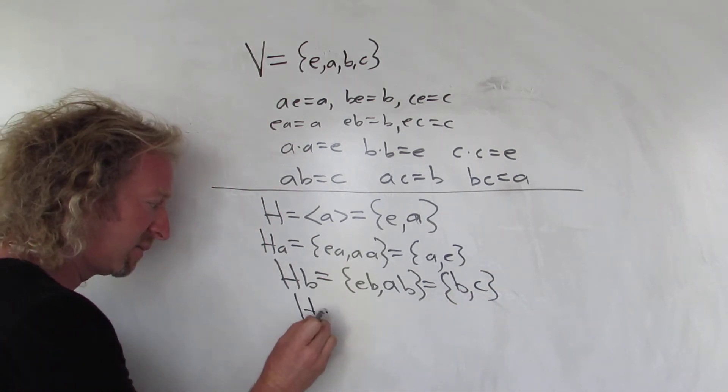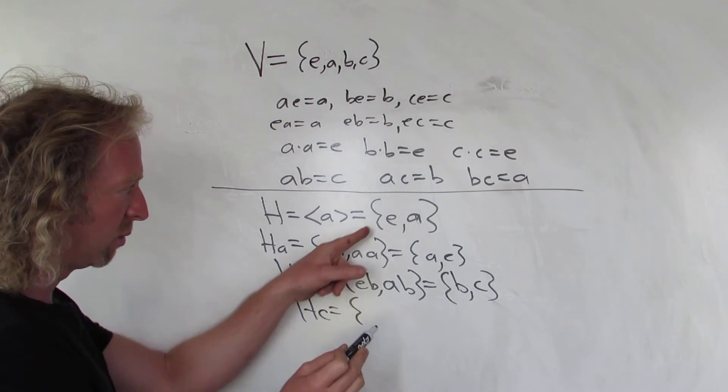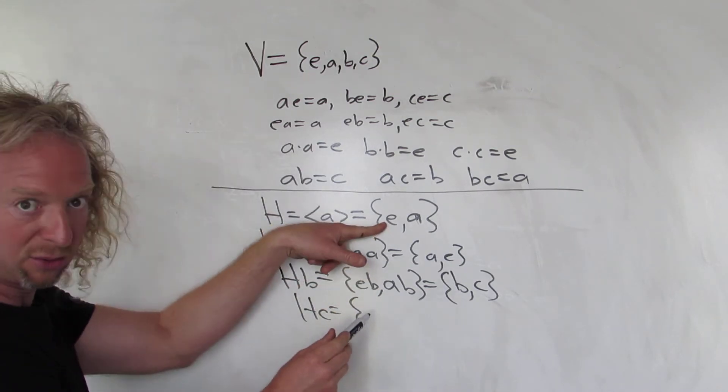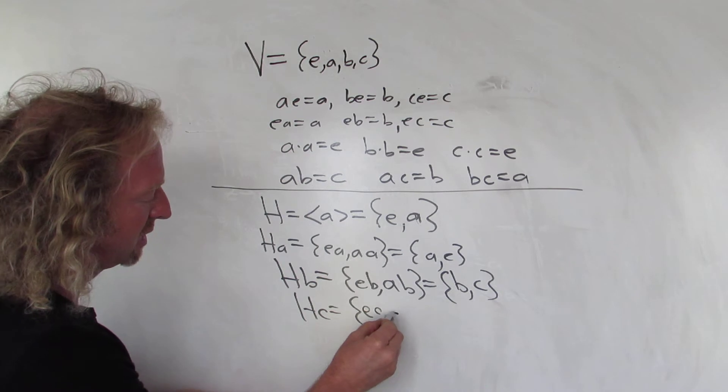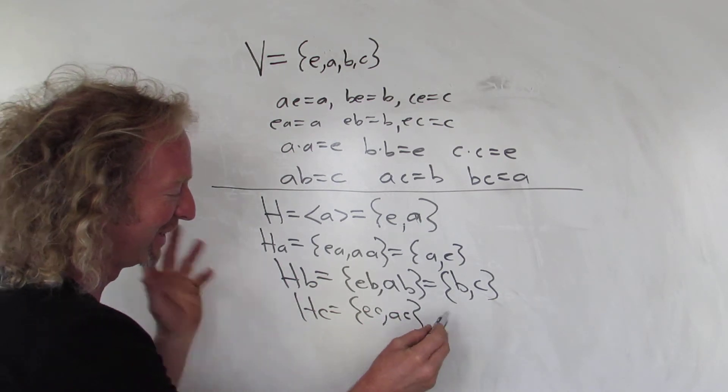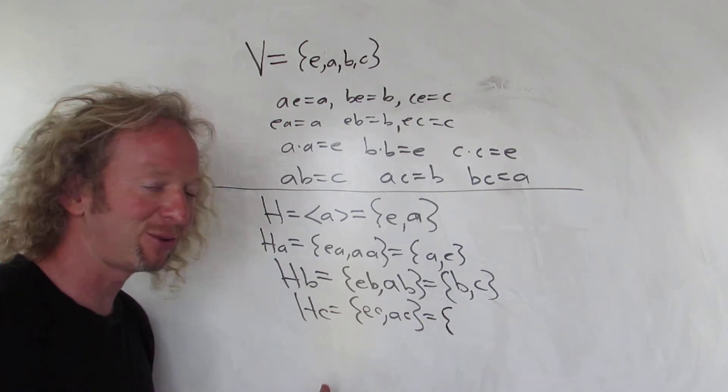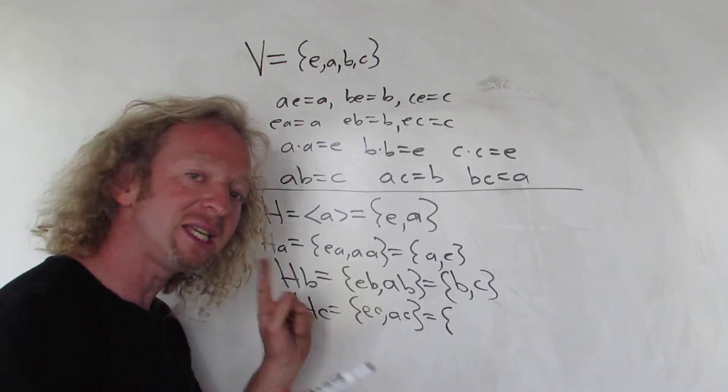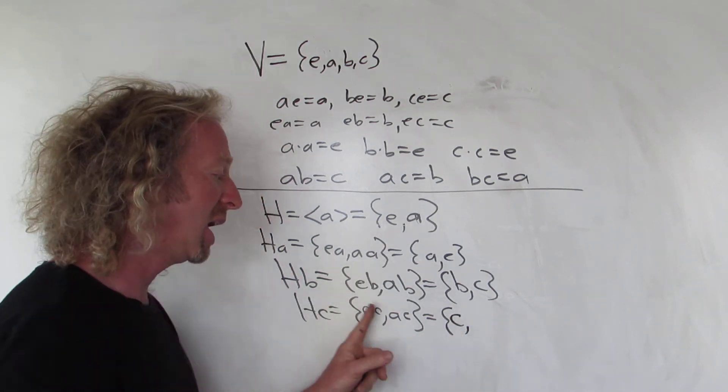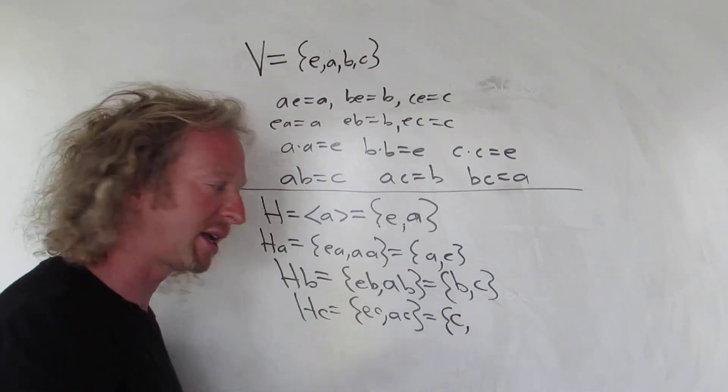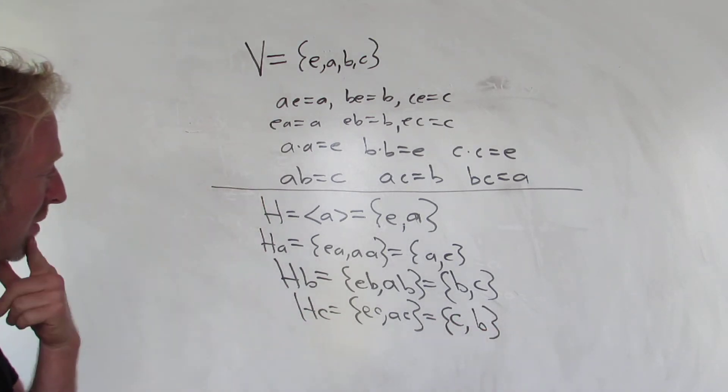If you do HC, well, that would give you, we're multiplying by C. So we're going to get EC, and we're going to get AC. EC, EC is C. AC, that's the other non-identity element, so it's going to be B. So it's the same thing.